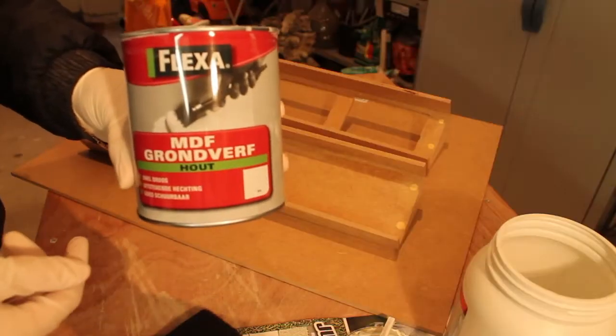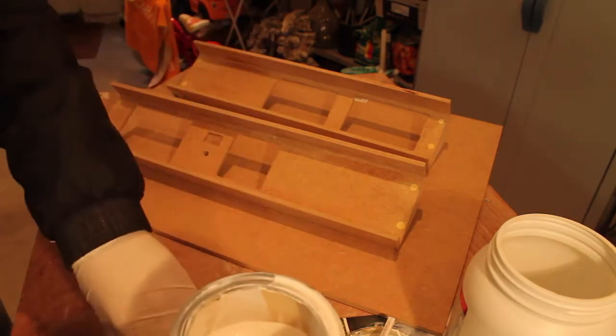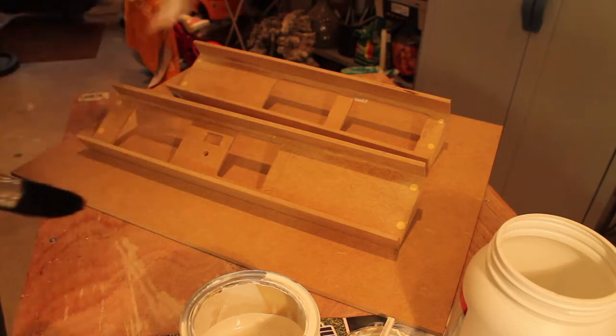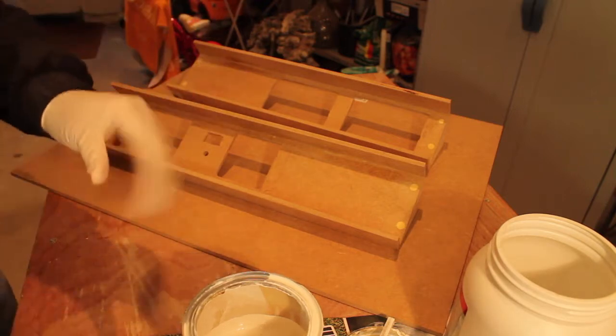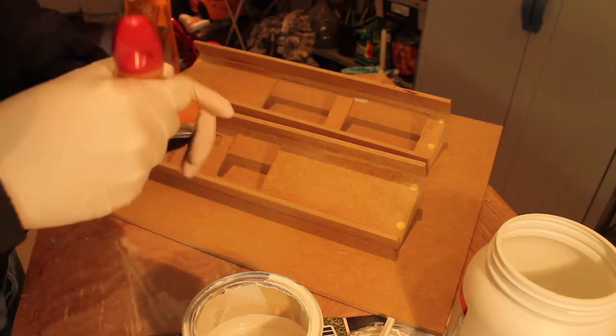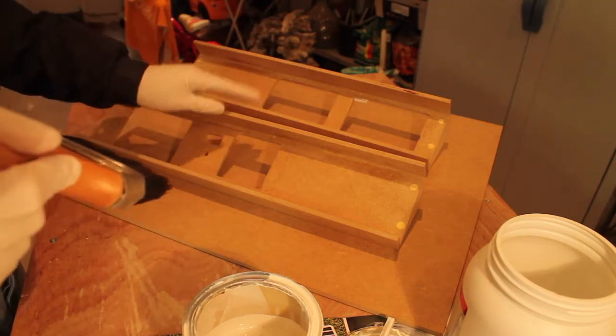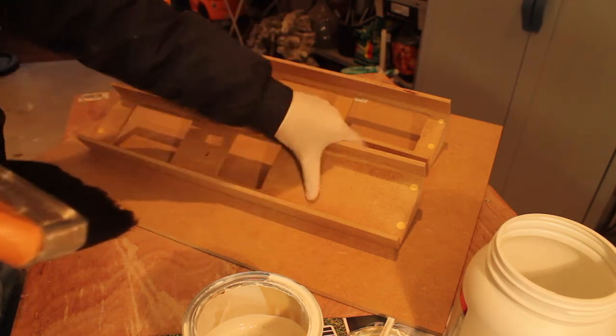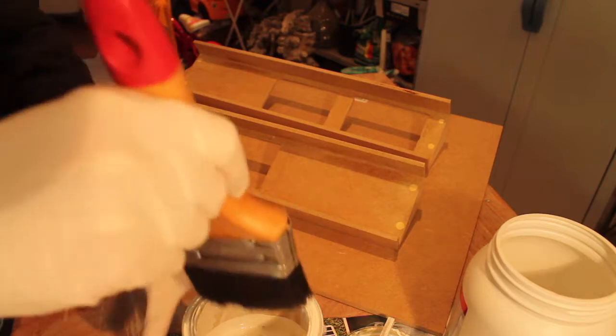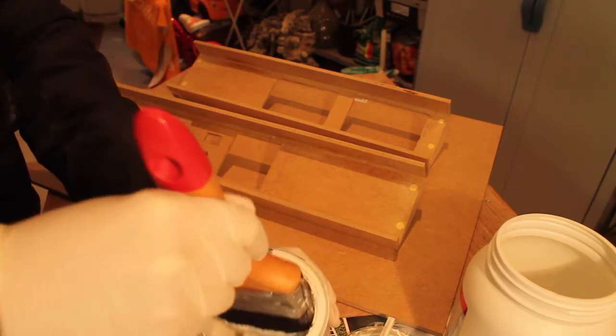I'm going to use some MDF ground paint. I think one coat of this will be enough and then one, maybe two coats of the actual paint. The pieces have already all been sanded and they've all been cleaned with a damp cloth so let's start putting some paint on it.